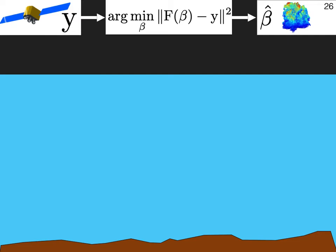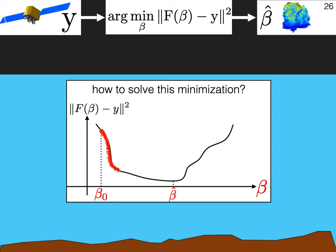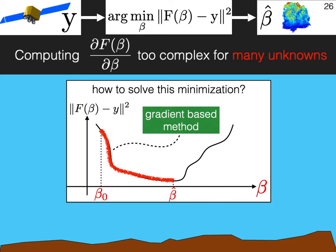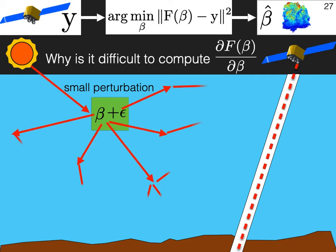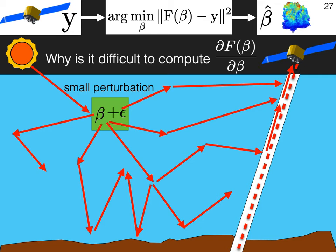Going back to the inverse problem, the question is now, how do we solve this minimization? A typical approach is to use a gradient-based method. However, the gradient is difficult to compute here. Now, let me give you some intuition why it is difficult to compute. Because a small perturbation to the parameters, or a small change in optical density at one point in the medium, in theory, affects the entire light field. Meaning that the light field needs to be recursively computed for every degree of freedom. And this is computationally prohibitive.